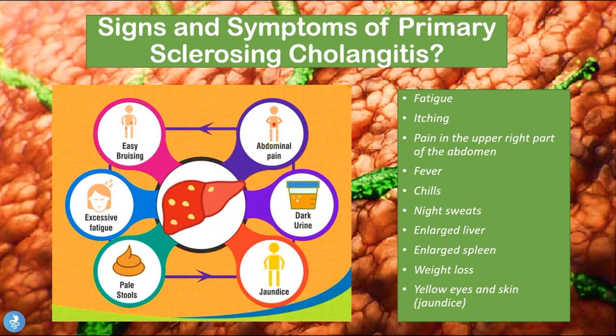Now let's talk about some signs and symptoms of primary sclerosing cholangitis. Patients will suffer from fatigue, itching, pain in the upper right part of the abdomen where the liver and biliary system is located, fever, chills, night sweats, an enlarged liver and enlarged spleen, weight loss, and yellowing of the eyes and skin which is called jaundice.